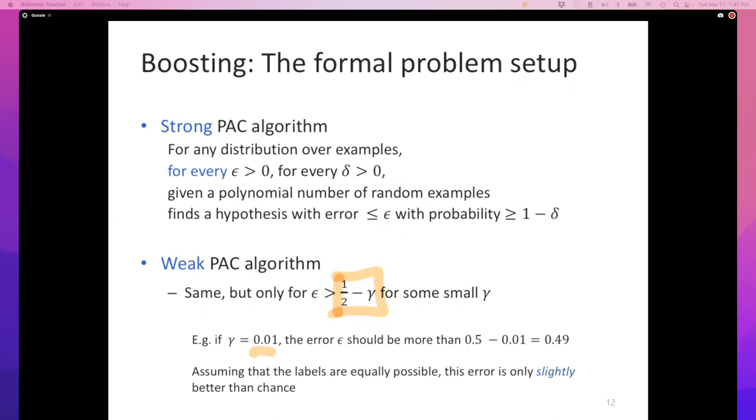For instance, if γ is 0.01, the weak PAC algorithm will give you a classifier whose error is no more than ½ - 0.01, which is 0.49. It cannot give you a classifier whose error is arbitrarily small. It can give you a classifier whose error is maybe slightly better than chance.